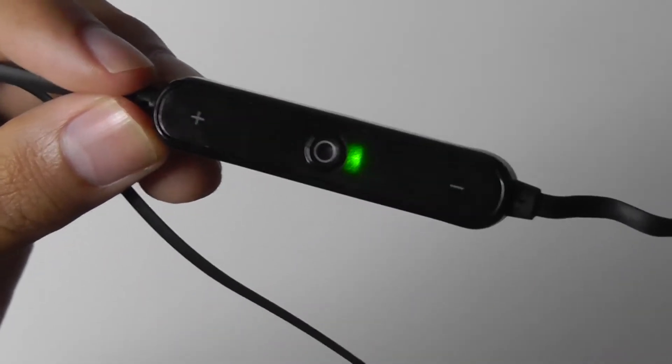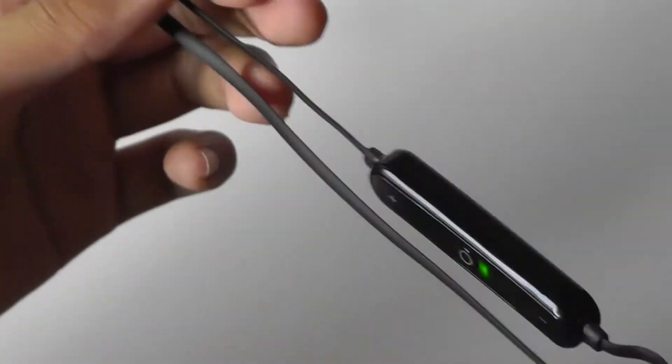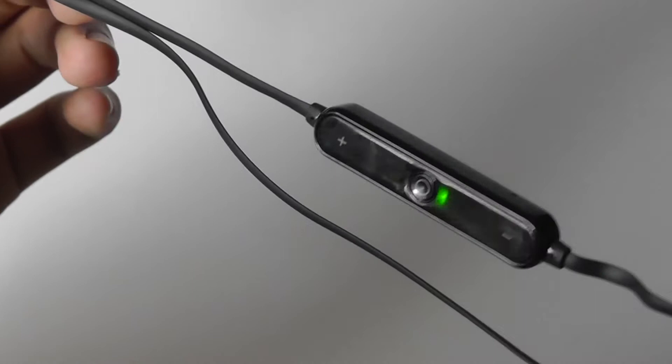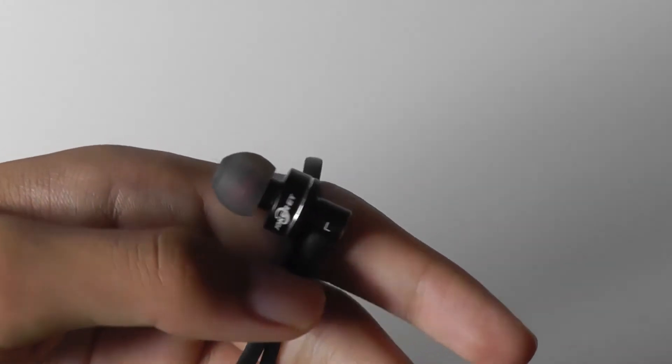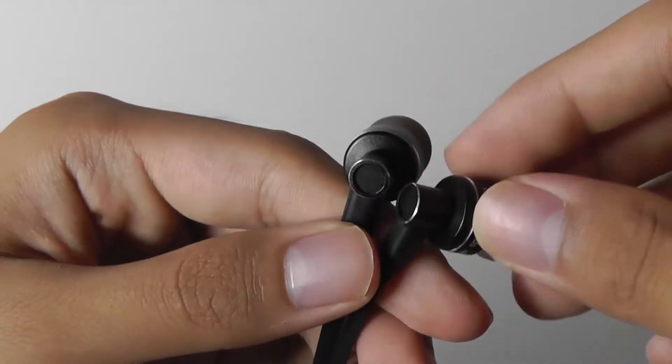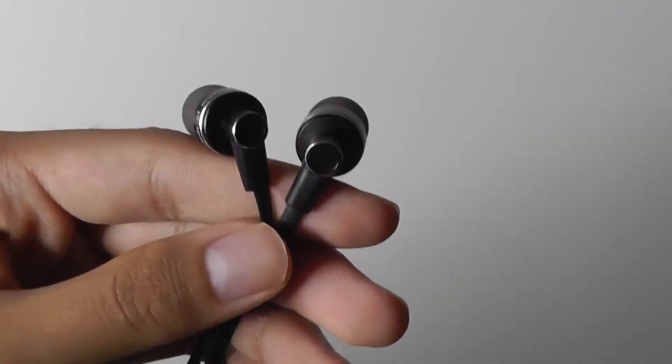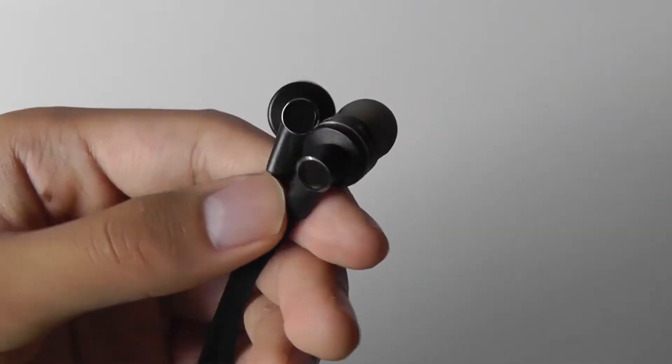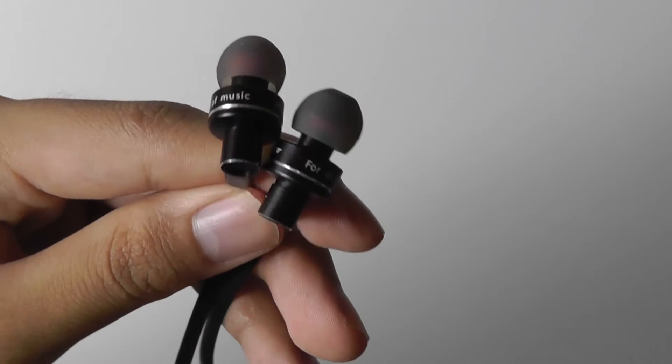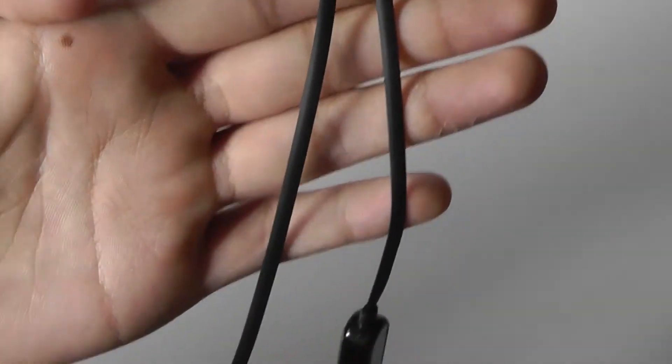Jocker also claims the S2 has two times the range of standard Bluetooth headsets, so whereas some Bluetooth earpieces might have a 10 meter range, the S2 should theoretically have a 20 meter range or connection range between the phone and the earpiece. In practice, we found that it was not exactly 20 meters. It was more like 15 meters or so before the connection range faded out, but it's still a bit longer than your average connection, which is good.